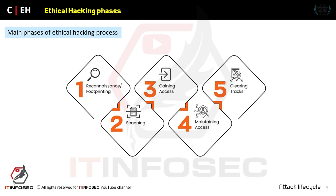Other information gathered in reconnaissance includes the web server operating system, open ports, and so on. This basic information gathering is known as reconnaissance or footprinting. The second step is scanning, which has three main categories.